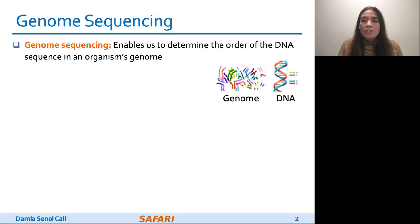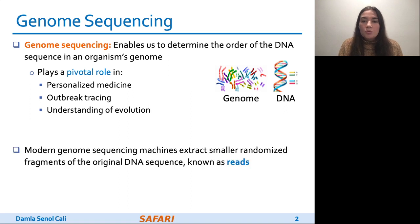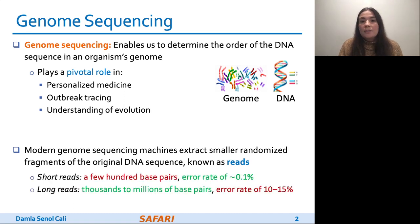Genome sequencing, which enables us to determine the DNA sequence of an organism, plays a pivotal role in areas such as personalized medicine, outbreak tracing like COVID-19, and the understanding of evolution. Modern genome sequencing machines extract small randomized fragments of the original DNA sequence, which we call reads, and produce either short reads or long reads.